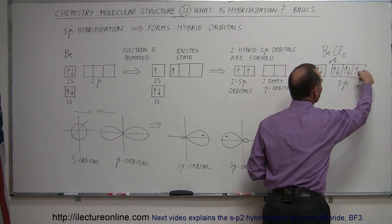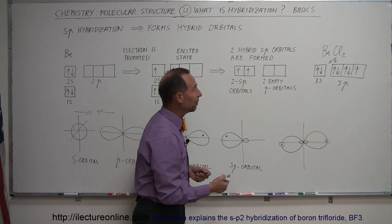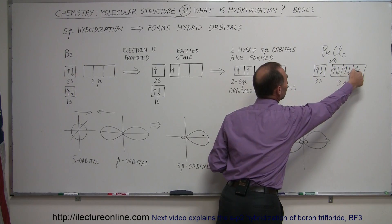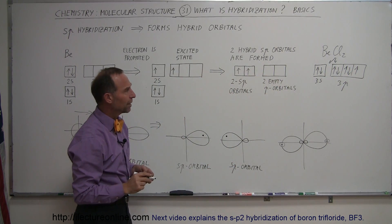So this orbital, this p orbital from chlorine, can bond with one of the sp orbitals from beryllium, and on the other chlorine, this p orbital from the other chlorine can form with the other sp orbital from the beryllium.